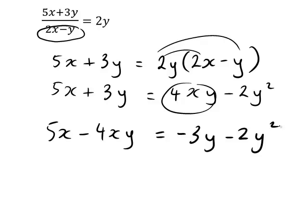So that is looking a fair bit better. At least now, all of our terms involving the required unknown x are on the one side, and everything else is on the other side of the equation.